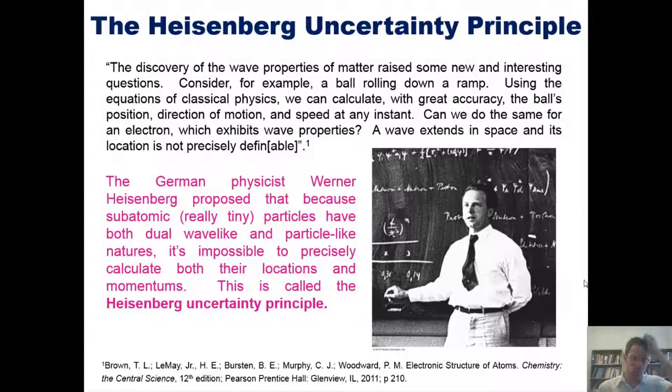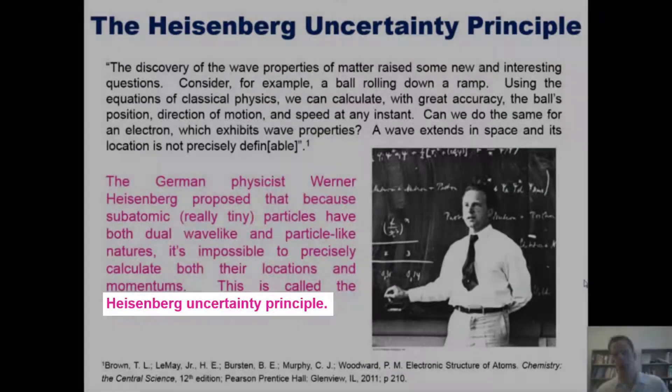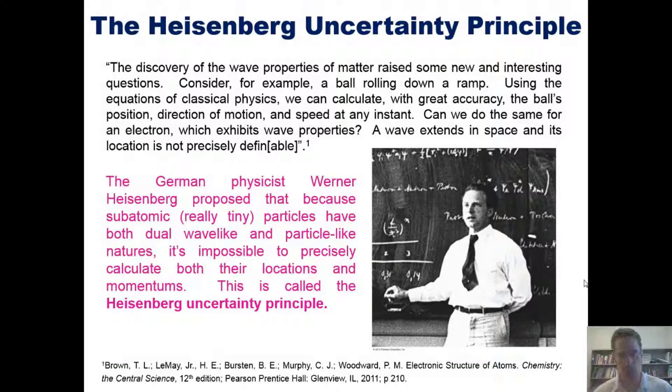This is called the Heisenberg uncertainty principle. So once again, the Heisenberg uncertainty principle says basically that you cannot, with a subatomic particle, know both its location and its momentum with perfect certainty.